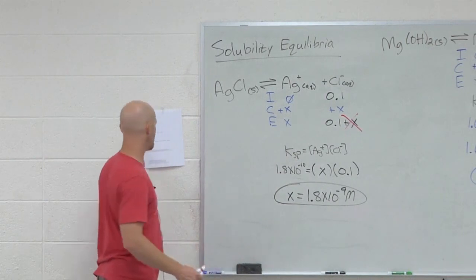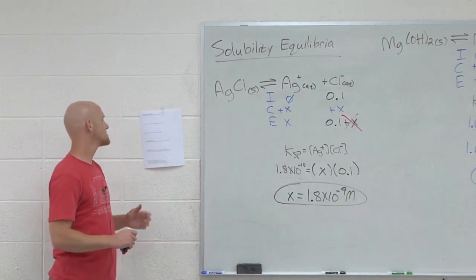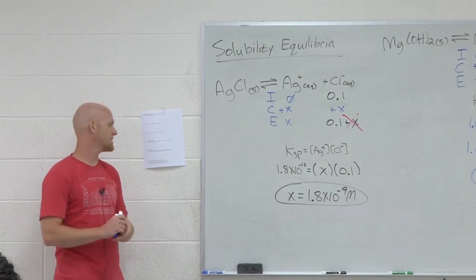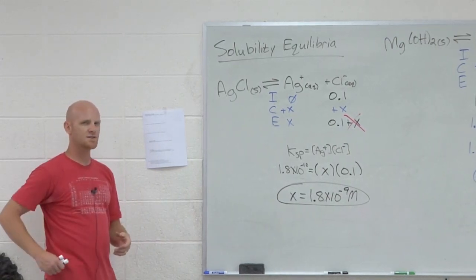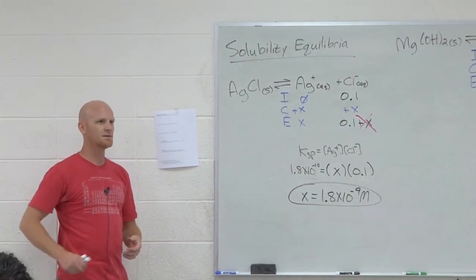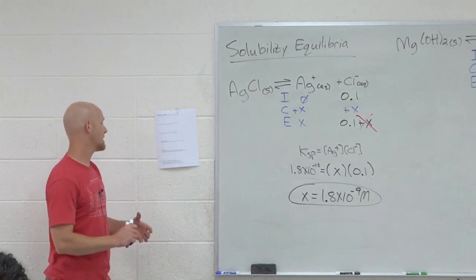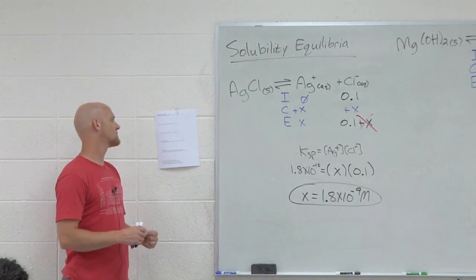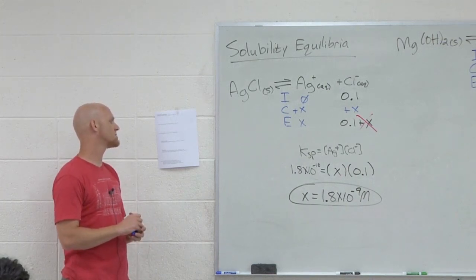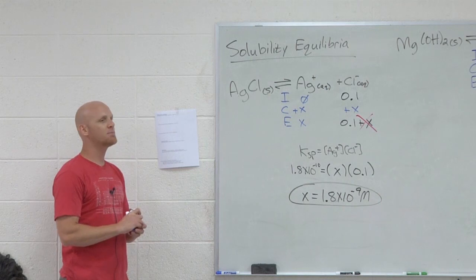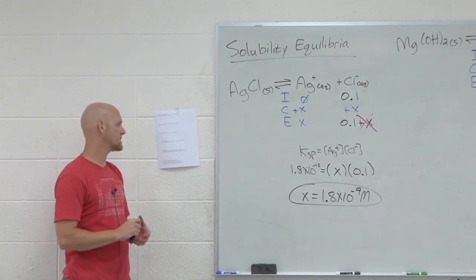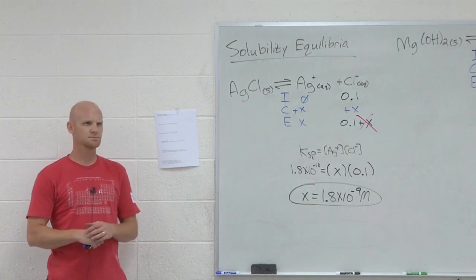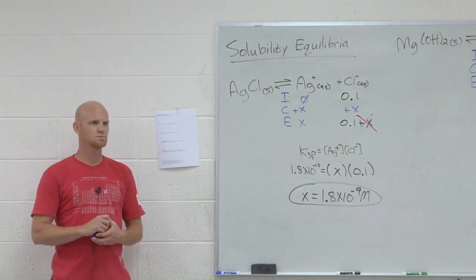But once those concentrations get high enough, those cations and anions might actually find each other. And the point at which they find each other is anything higher than the KSP value. Once you exceed the KSP, you got too many ions. And this equilibrium is going to have to shift back to the solid, form a precipitate, to lower them back down. So if you go over the KSP, you form a precipitate. So part E, precipitation. To a 0.001 molar solution of magnesium nitrate.